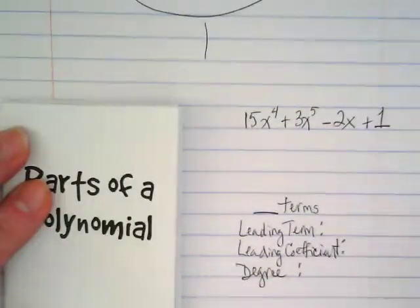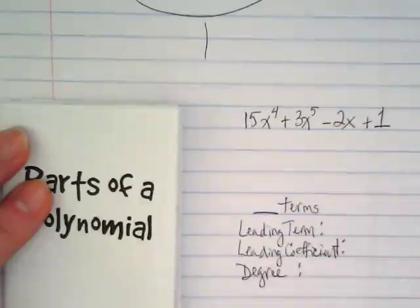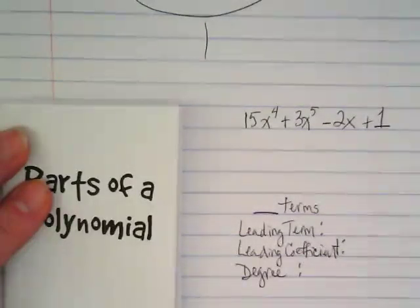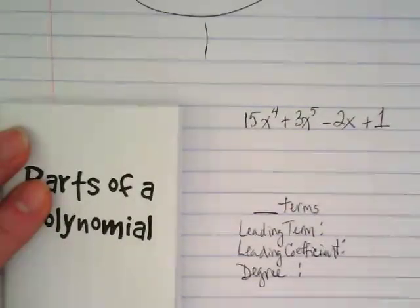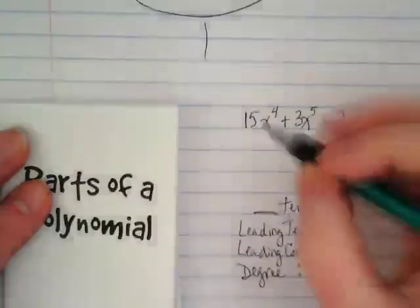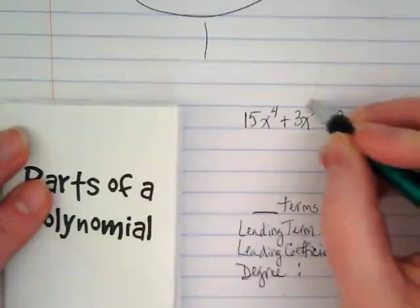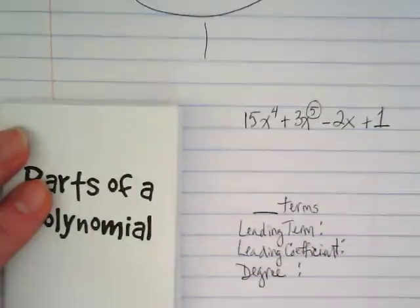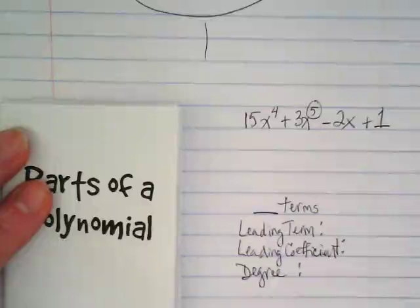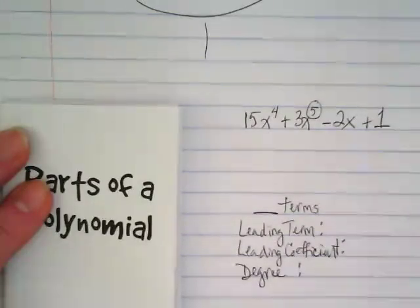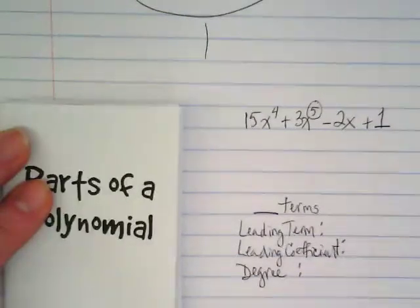The correct order or standard form for a polynomial has the highest exponent first, and then the next term has the next lowest, next lowest, until we have no variable. So we're going to rewrite this because right here I see our leading exponent. It's a good thing lunch is next. No, it's not. I have to teach another class.